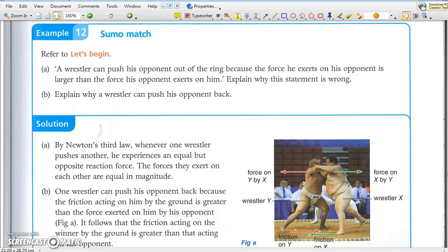Example 12 shows an interesting application of the third law in sumo match. Note that the pushes by the wrestlers are the same in magnitude due to the third law, but usually only one of them falls. So who won't fall? It is the one who experiences the greatest friction.